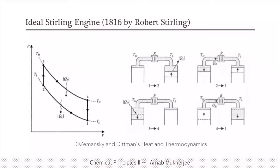Here we are showing the Stirling engine cycle for an ideal system, assuming no losses due to friction or other things. It is very interesting to know that the Stirling engine came almost eight years before the Carnot engine — around 1816 — whereas Carnot proposed the Carnot cycle around 1824.